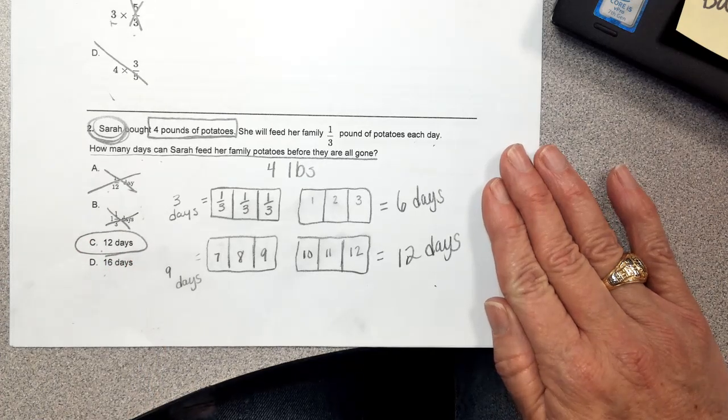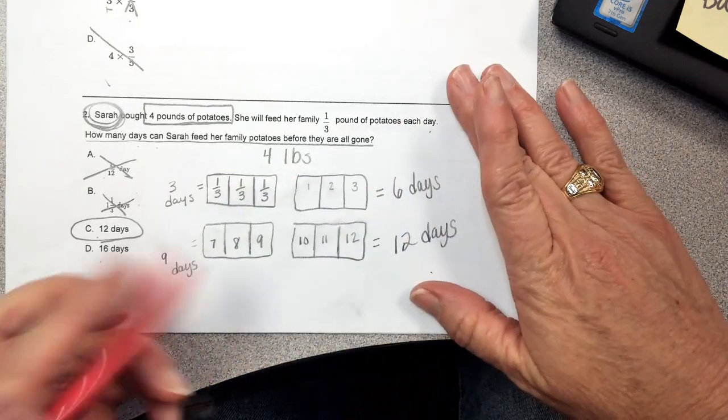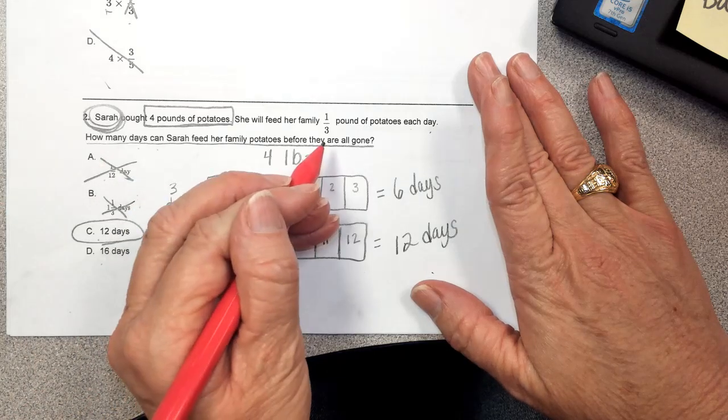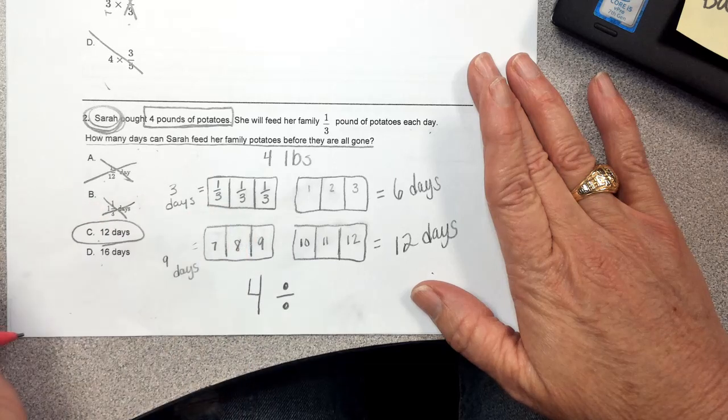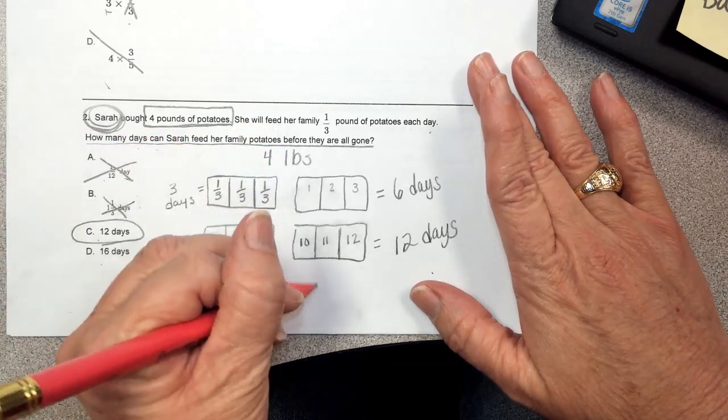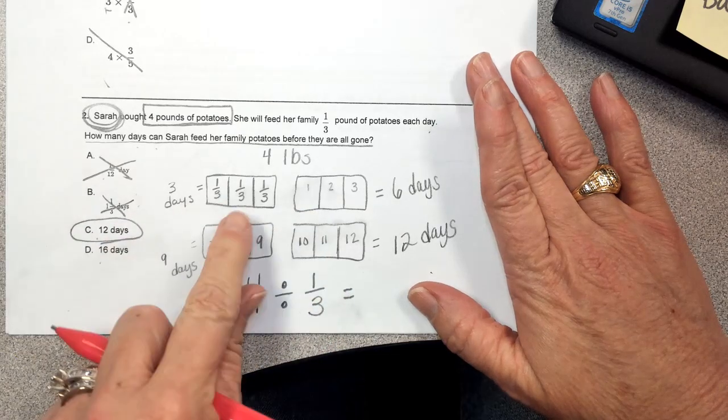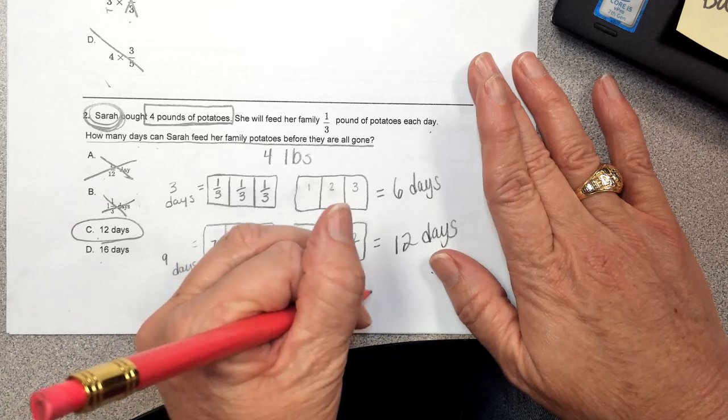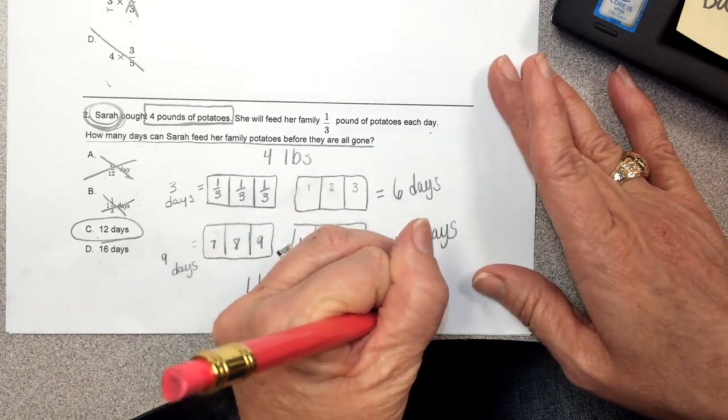And so if I really want to think about what is happening here, I'm taking my four pounds of potatoes and I'm separating. That means I'm dividing them evenly into one-third portions. And if I take four pounds and I divide them into one-third portions, I will get 12 portions. I will get 12 days.